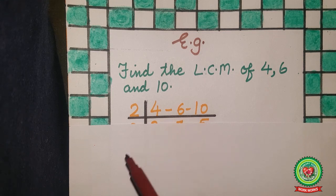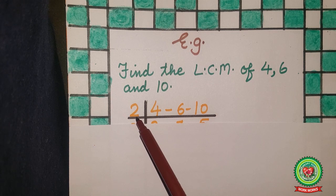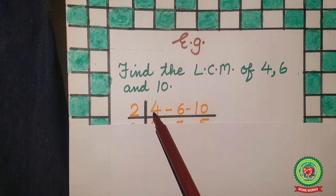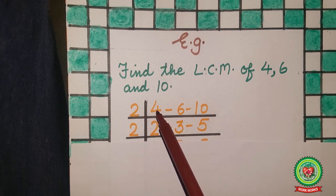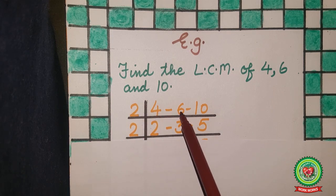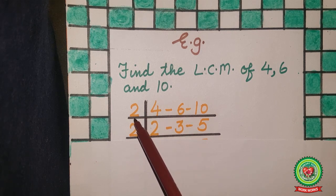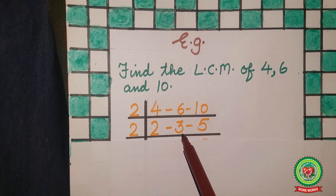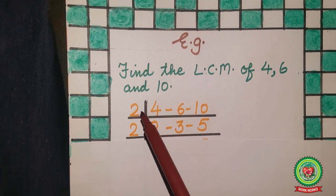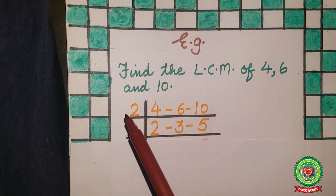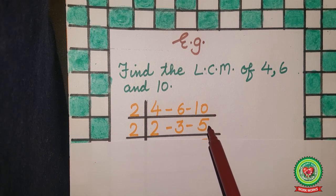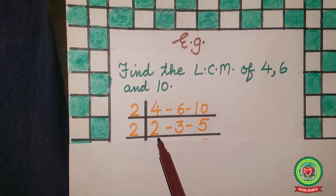On the 2 times table, 4 comes at 2 twos, so below 4 write 2. On the 2 times table, 6 comes at 2 threes, so below 6 write 3. On the 2 times table, 10 comes at 2 fives, so below 10 write 5. Now 2 is also a prime number, so divide 2 by 2: 2 divided by 2 gives 1, so below 2 write 1.